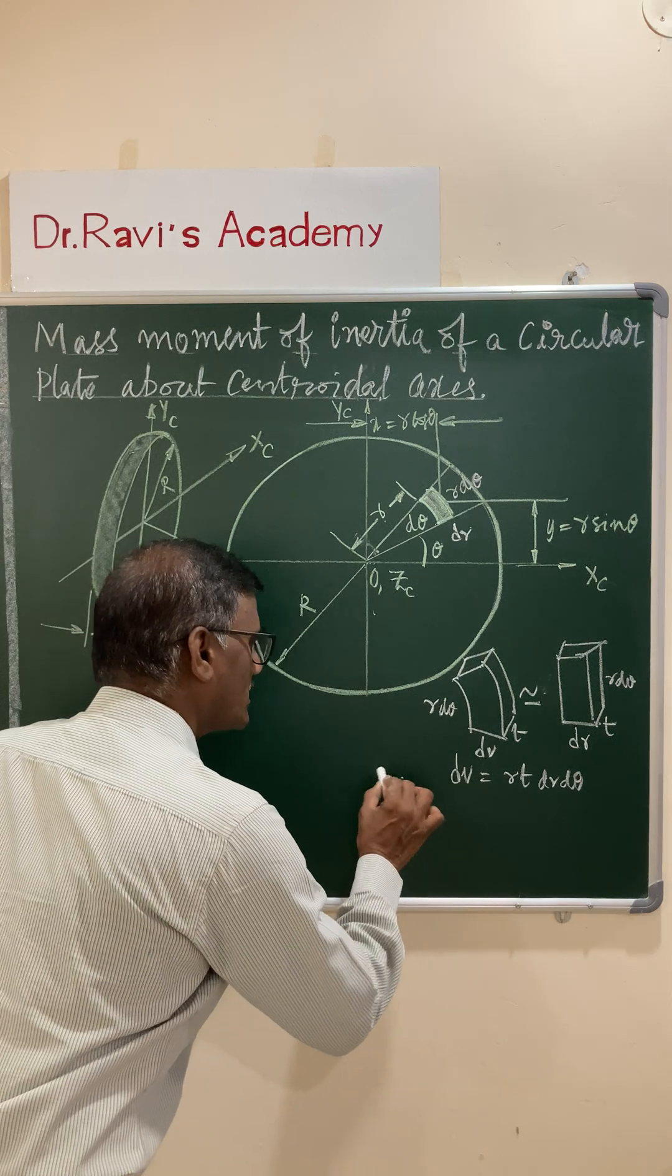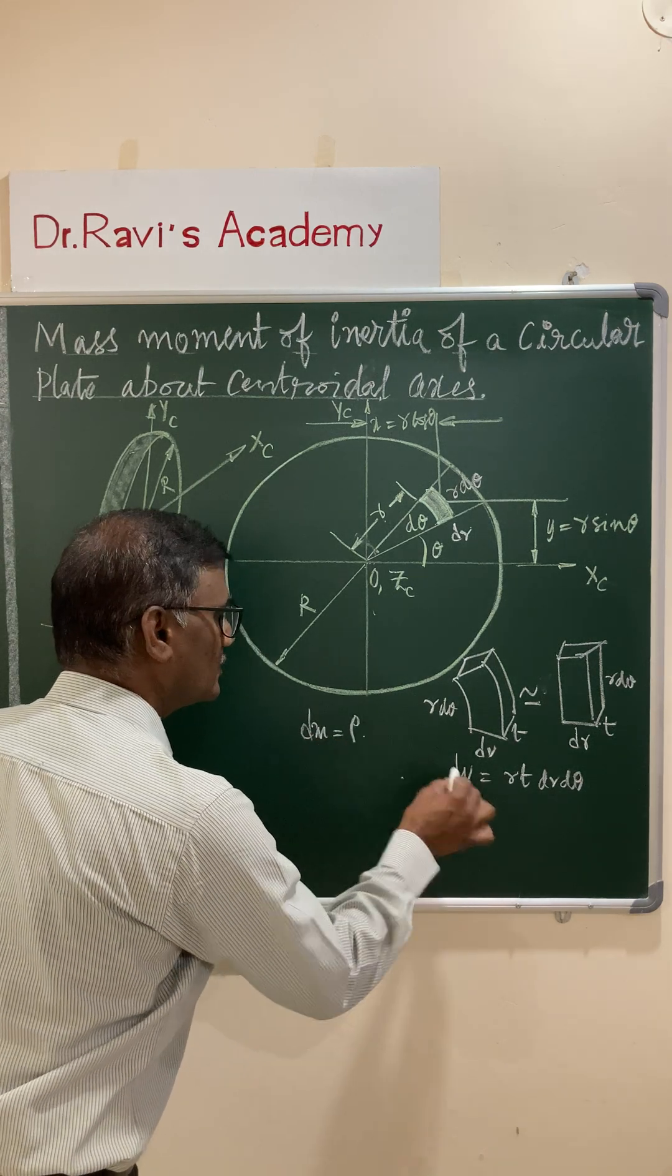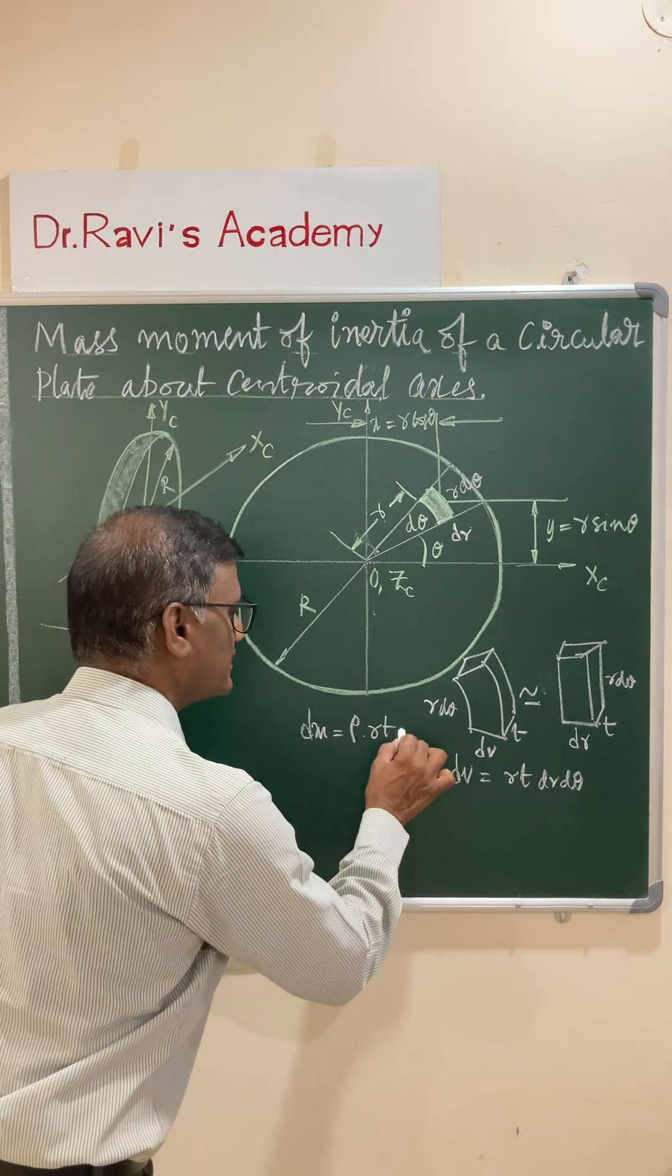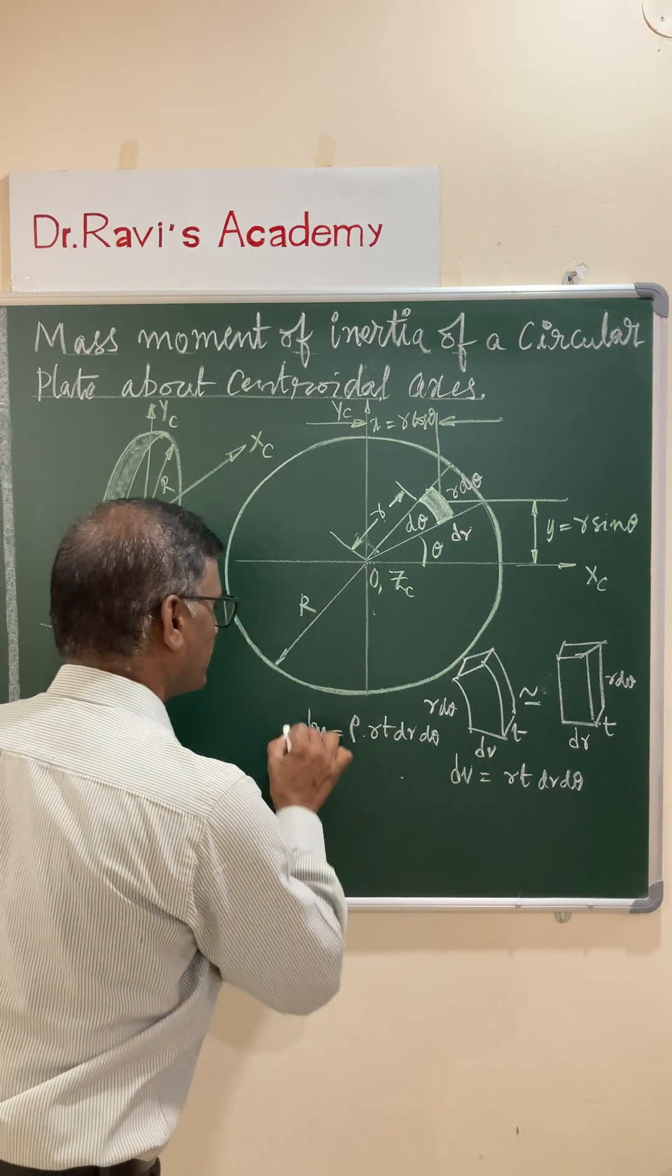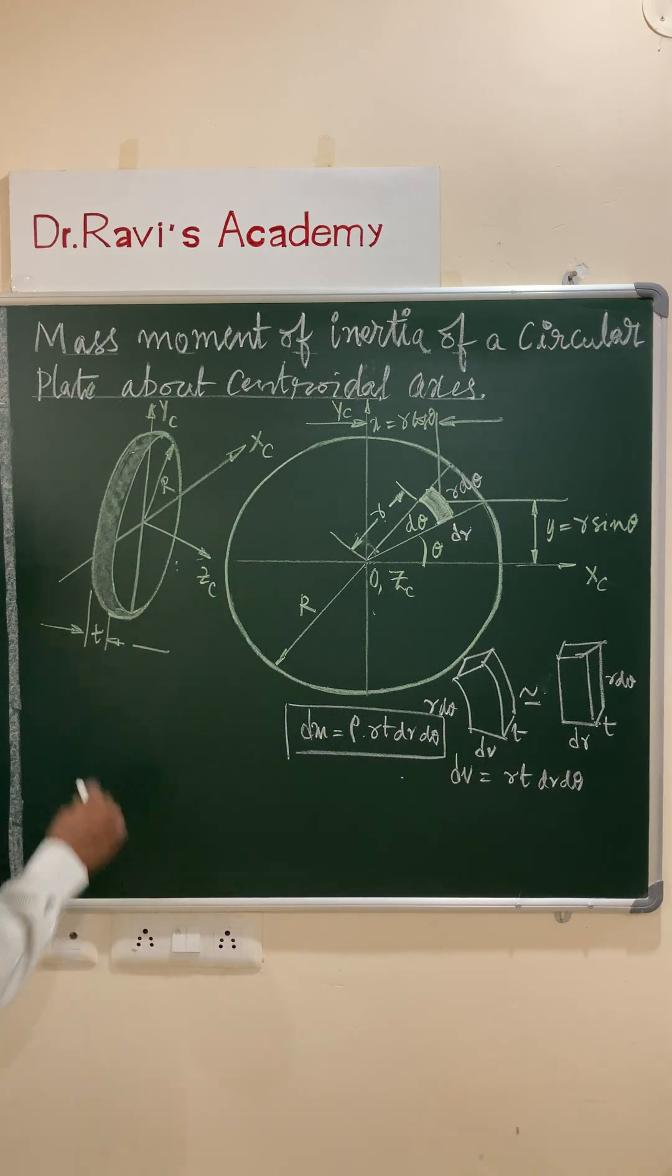And elemental mass, you can write down dm is equal to rho into dv that is r t dr d theta. Elemental mass is required to calculate the moment of inertia.